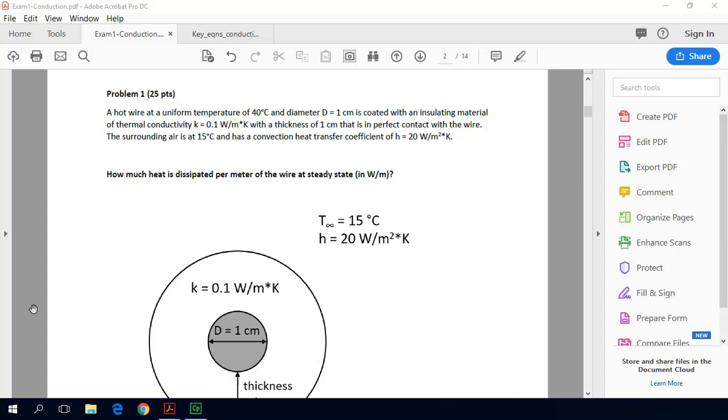degrees Celsius and diameter one centimeter is coated with an insulating material of thermal conductivity K equals 0.1 watts per meter Kelvin with a thickness of one centimeter that is in perfect contact with the wire. The surrounding air is at 15 degrees Celsius and has a convection heat transfer coefficient of 20 watts per meter squared per Kelvin. How much heat is dissipated per meter of the wire at steady state?